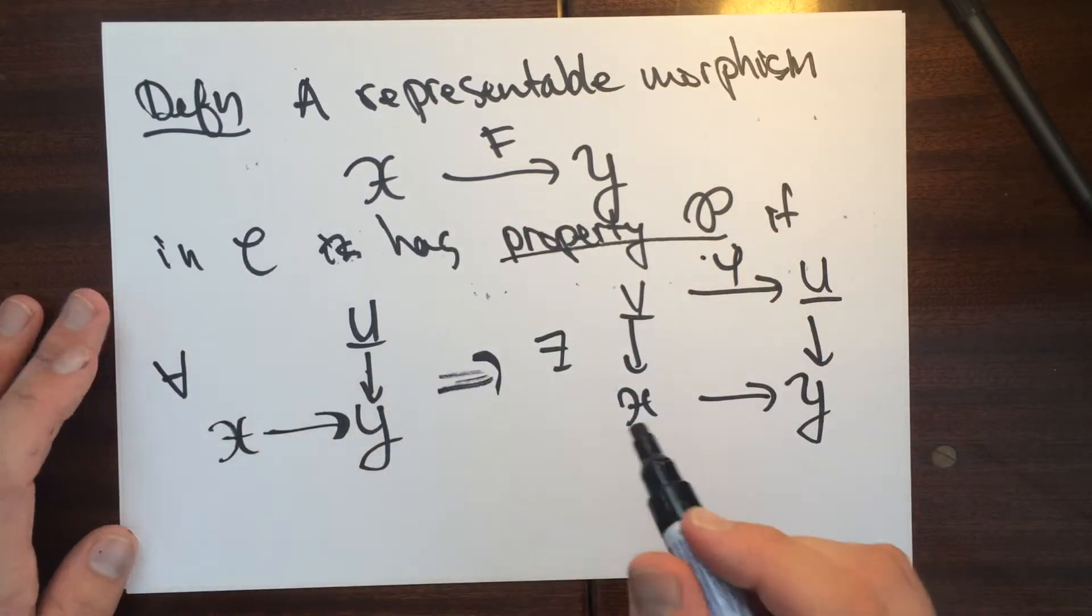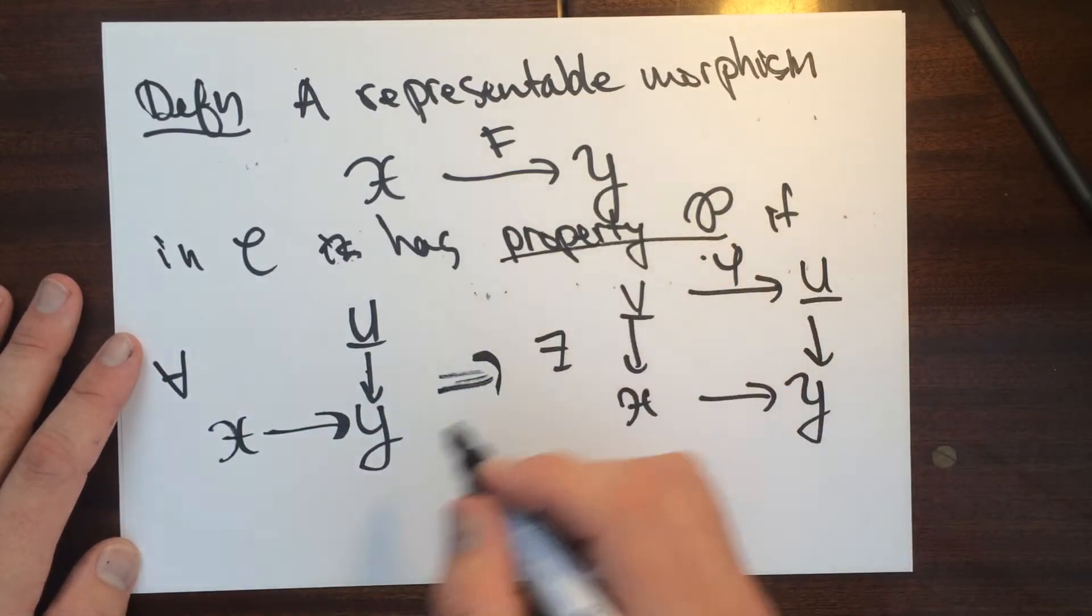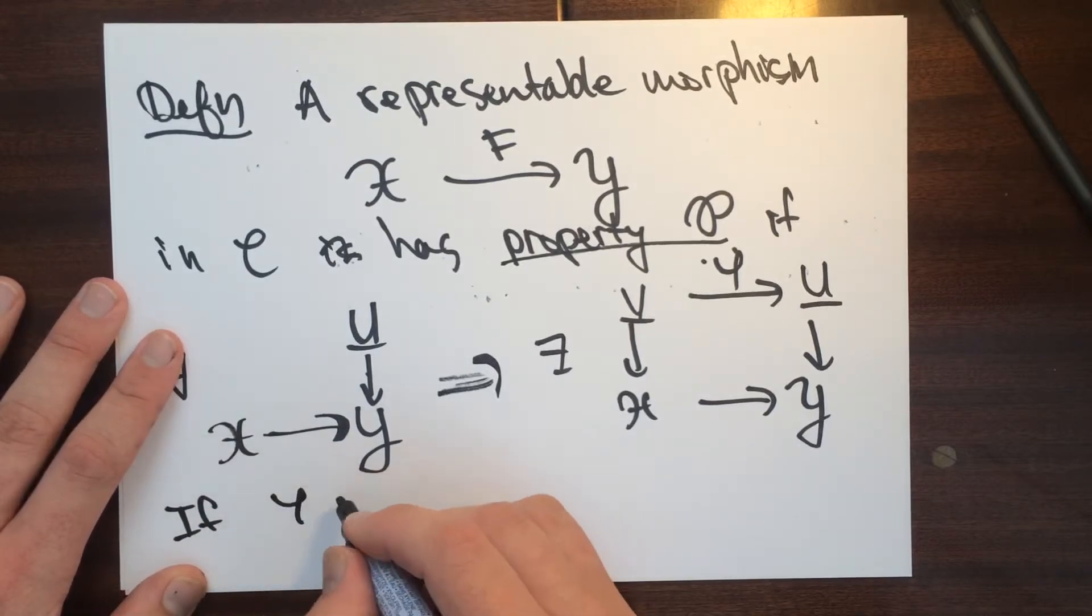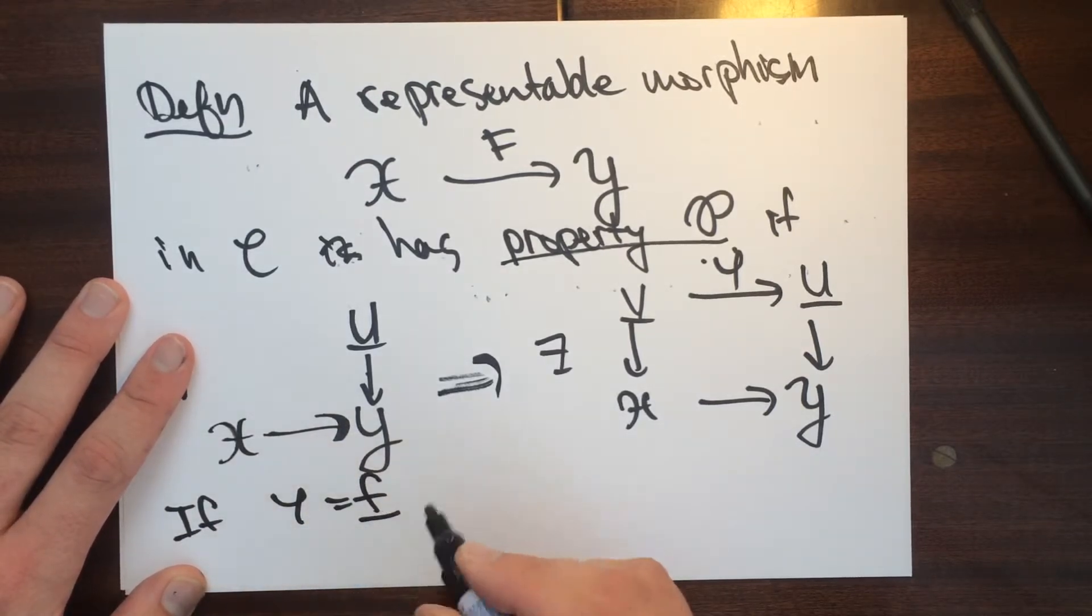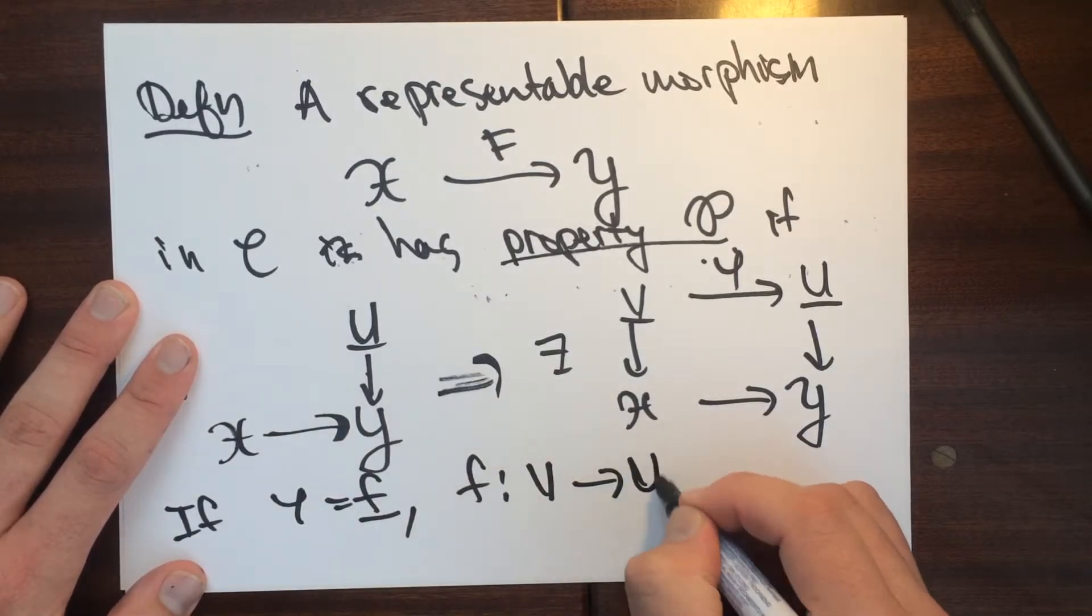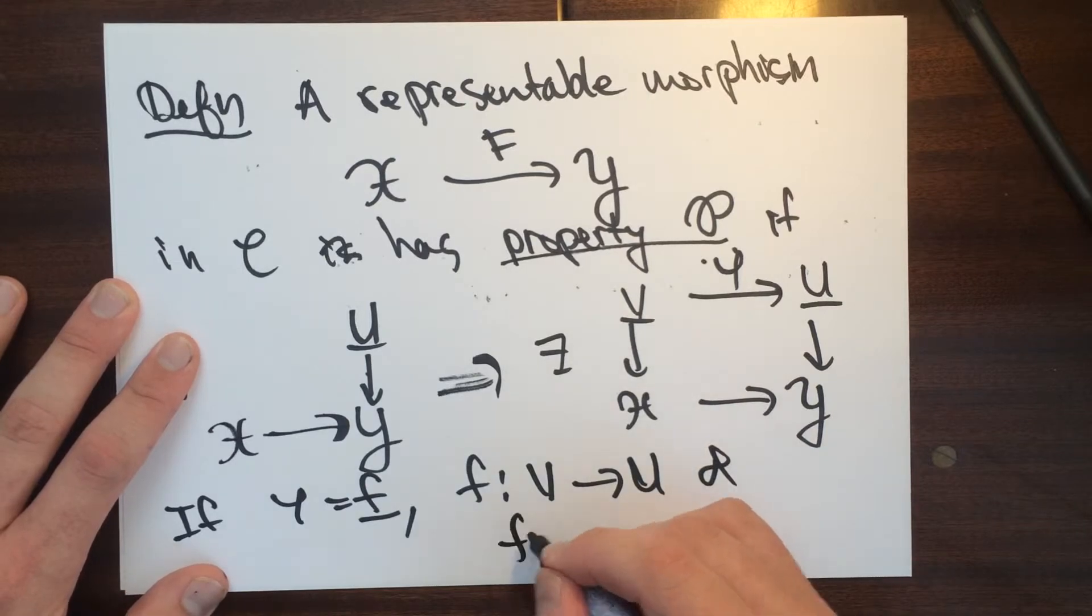And we'll say that when we do this, that this has property P if phi is equal to f bar, where f is a map from V to U and f has property P.